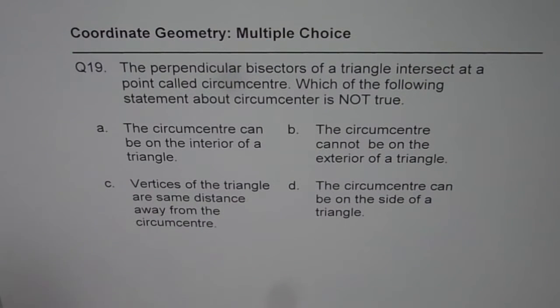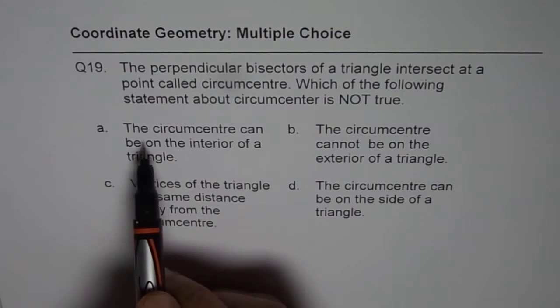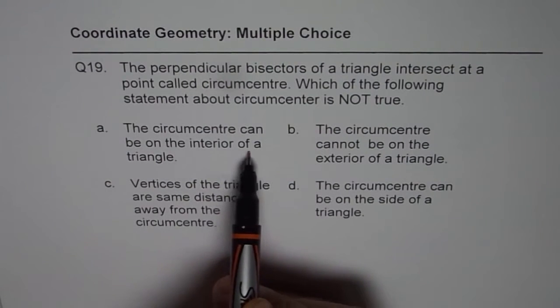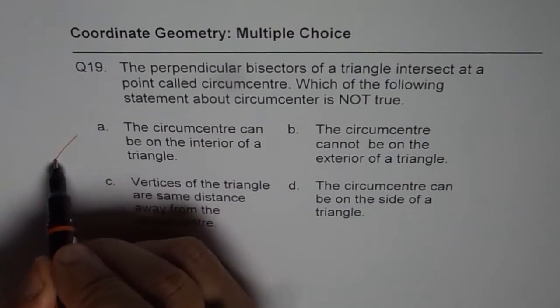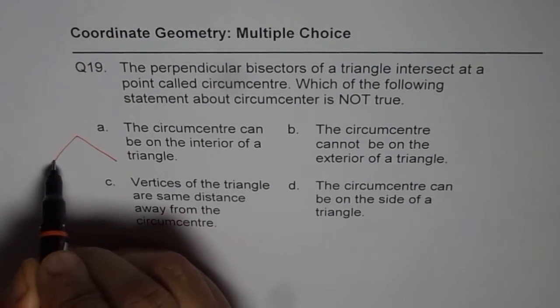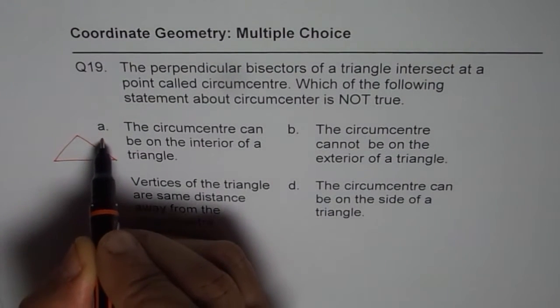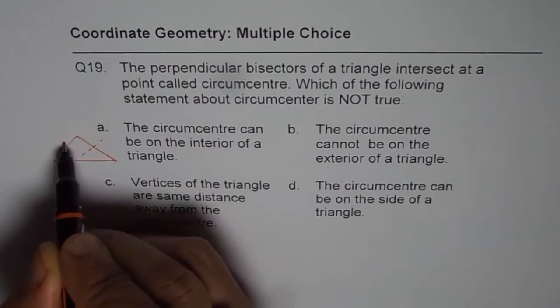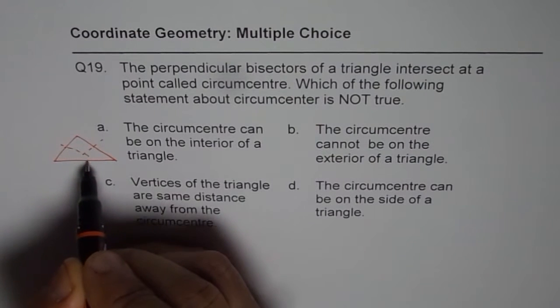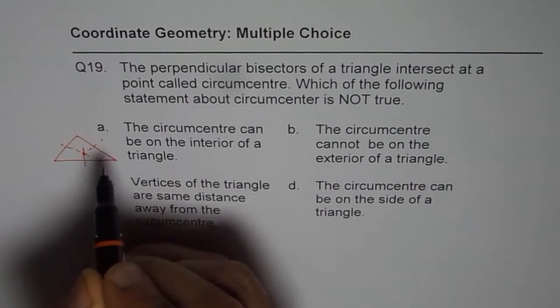Let's look into it one by one. The circumcenter can be in the interior of a triangle. So if you have an acute angle triangle, for example, then the bisectors will actually intersect in the interior of a triangle. So this is correct.